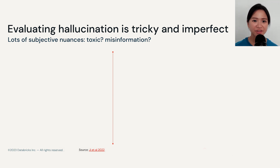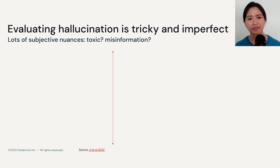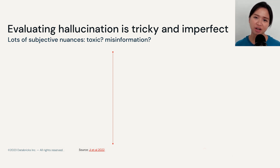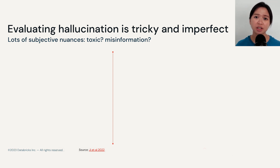Evaluating hallucination is tricky and imperfect. Different individuals can have different expectations about how models behave, and we can also have very different decision criteria to determine whether content is toxic or classified as misinformation. There are two categories of metrics we can rely on to assist with evaluating hallucination.